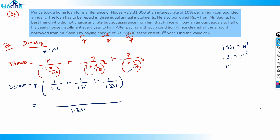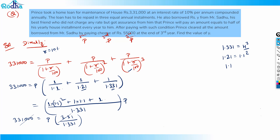So 3,31,000 = P × 3.31 / 1.331. This cancels out nicely — 3.31 / 1.331 simplifies perfectly with the zeros, giving P = 1,33,100. That is the value of the equal annual installment P.